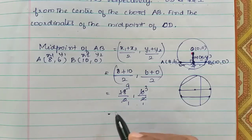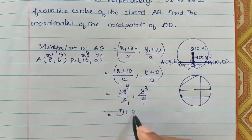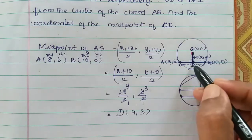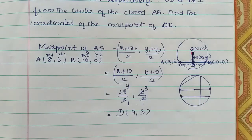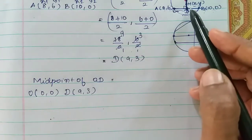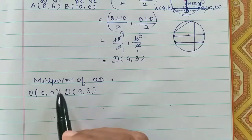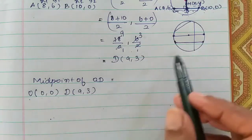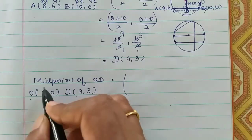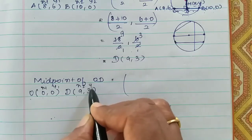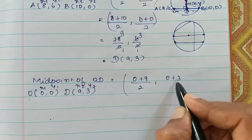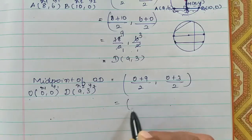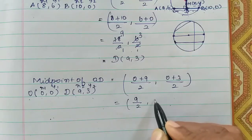So the coordinates of D, the midpoint of AB, are (9,3). Now we find the midpoint M of OD. O has coordinates (0,0) and D has coordinates (9,3). We apply the midpoint formula again: x1=0, y1=0, x2=9, y2=3. So midpoint M = ((0+9)/2, (0+3)/2) = (9/2, 3/2).